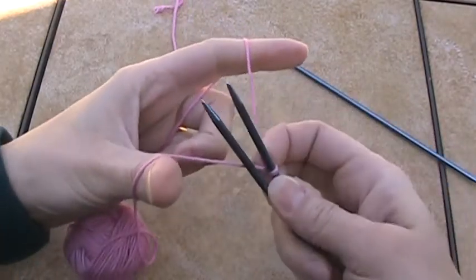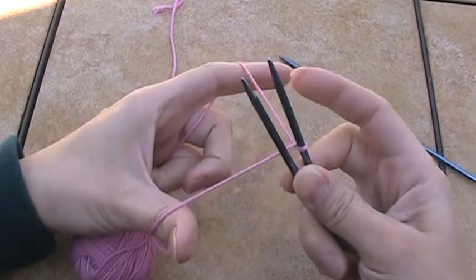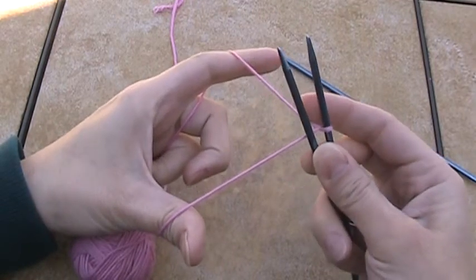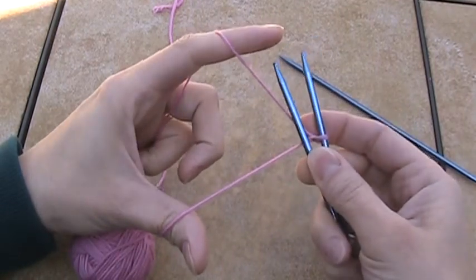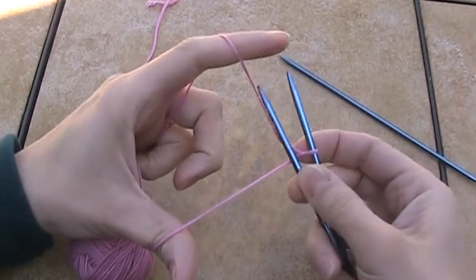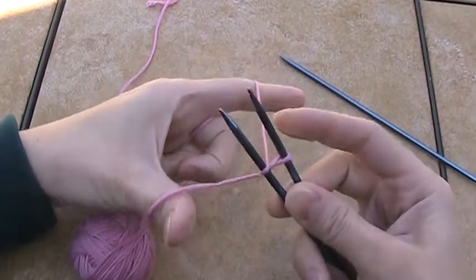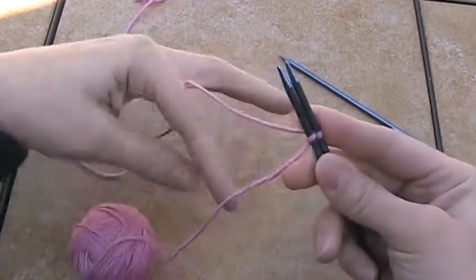So hold the tail on your index finger, the working yarn on your thumb, and then you're going to alternate loading the stitches up. To get a stitch on the front needle, you take the yarn from your index finger, wrap it around and through the middle, and you want these stitches to be pretty tight.